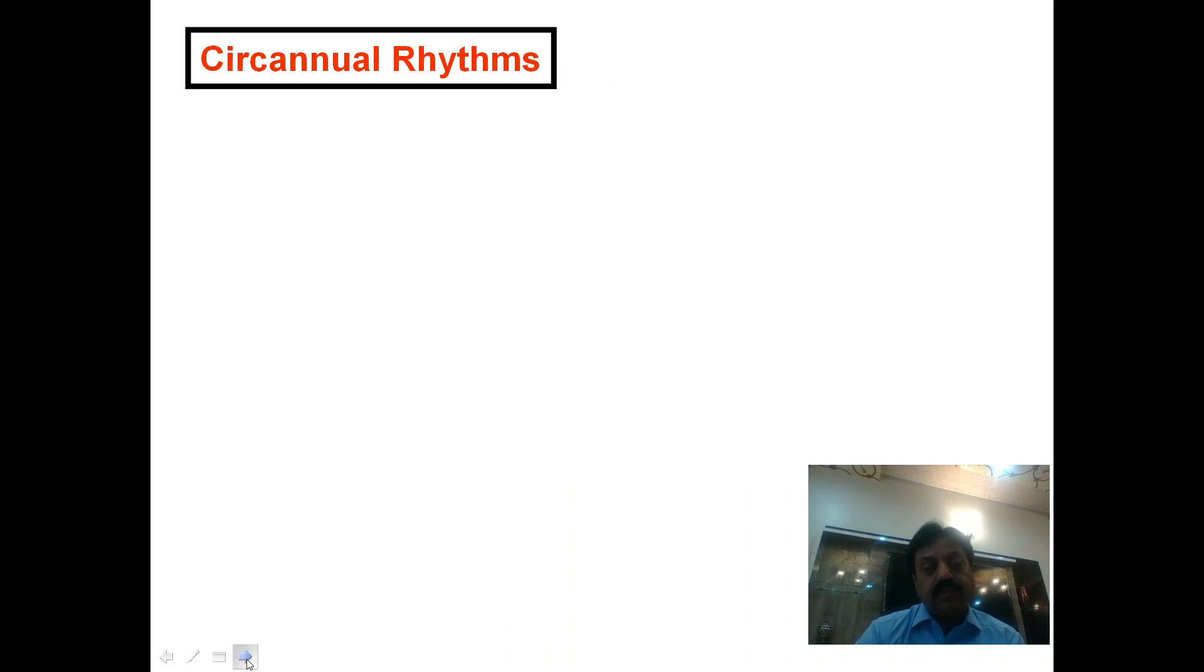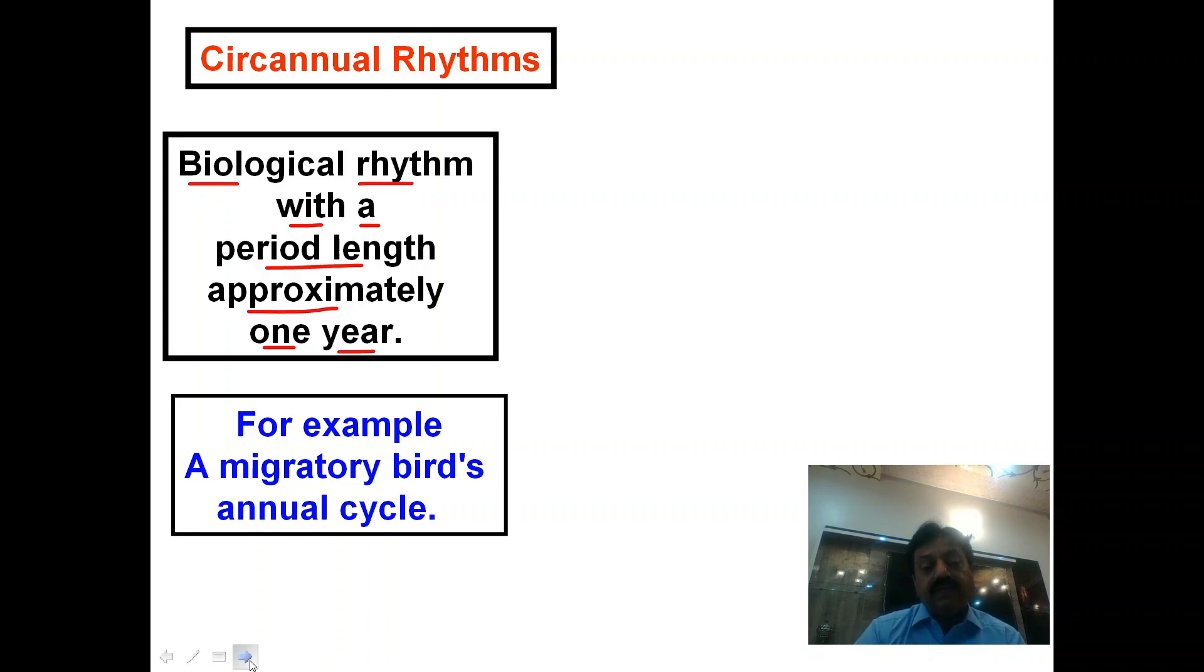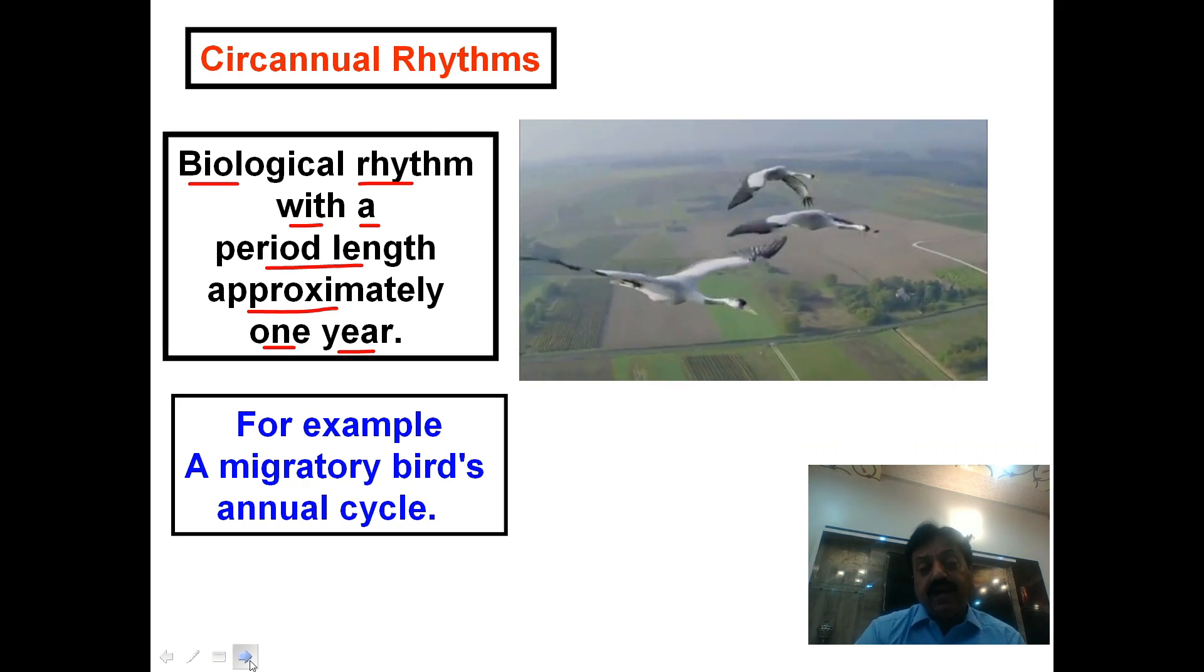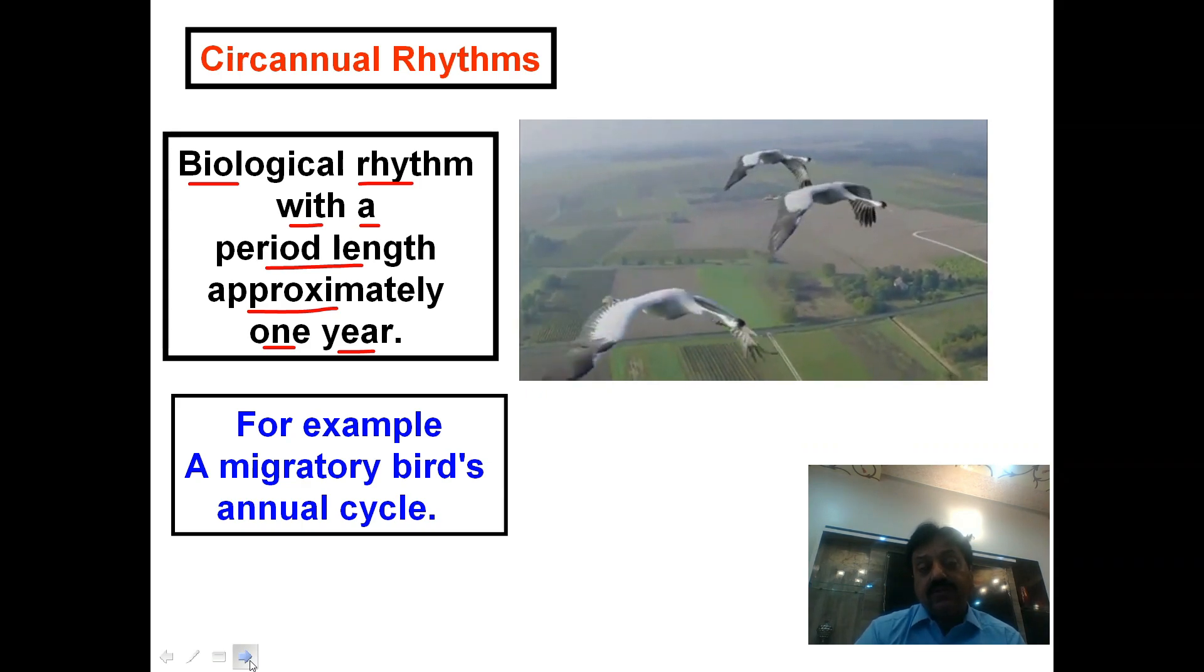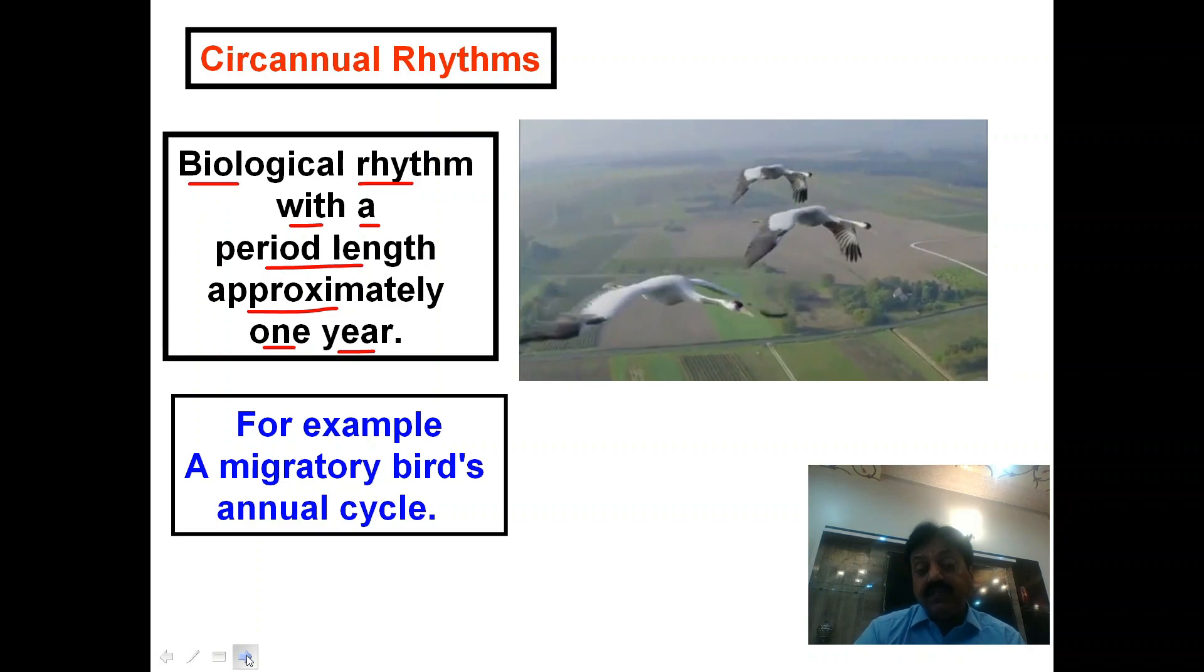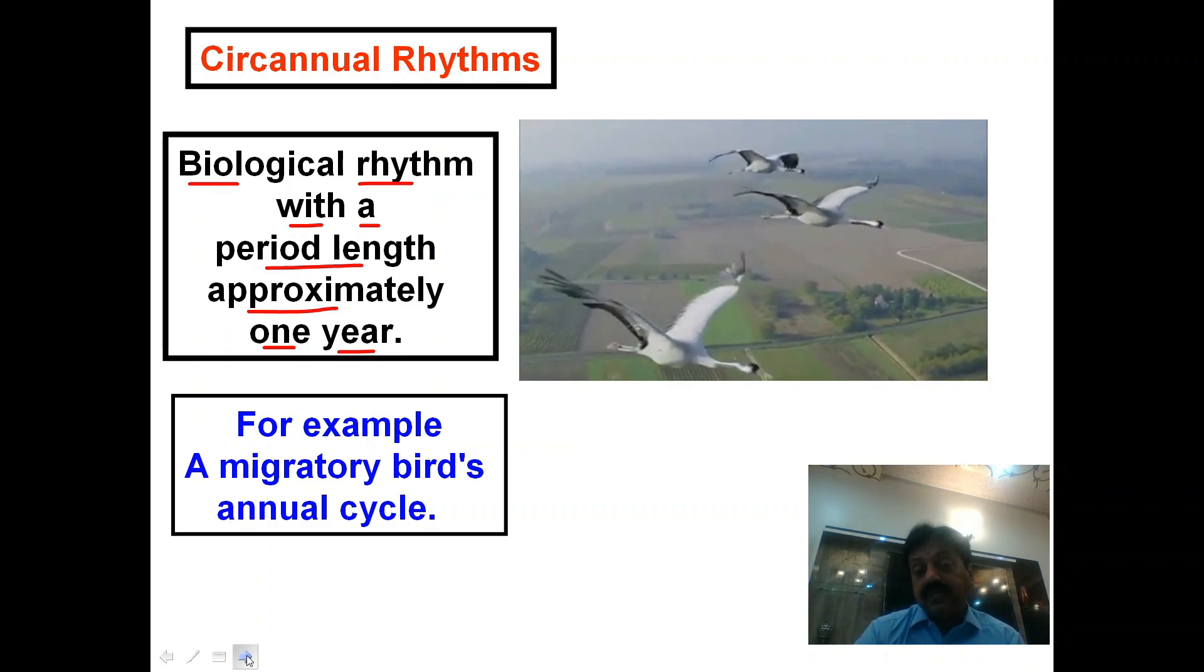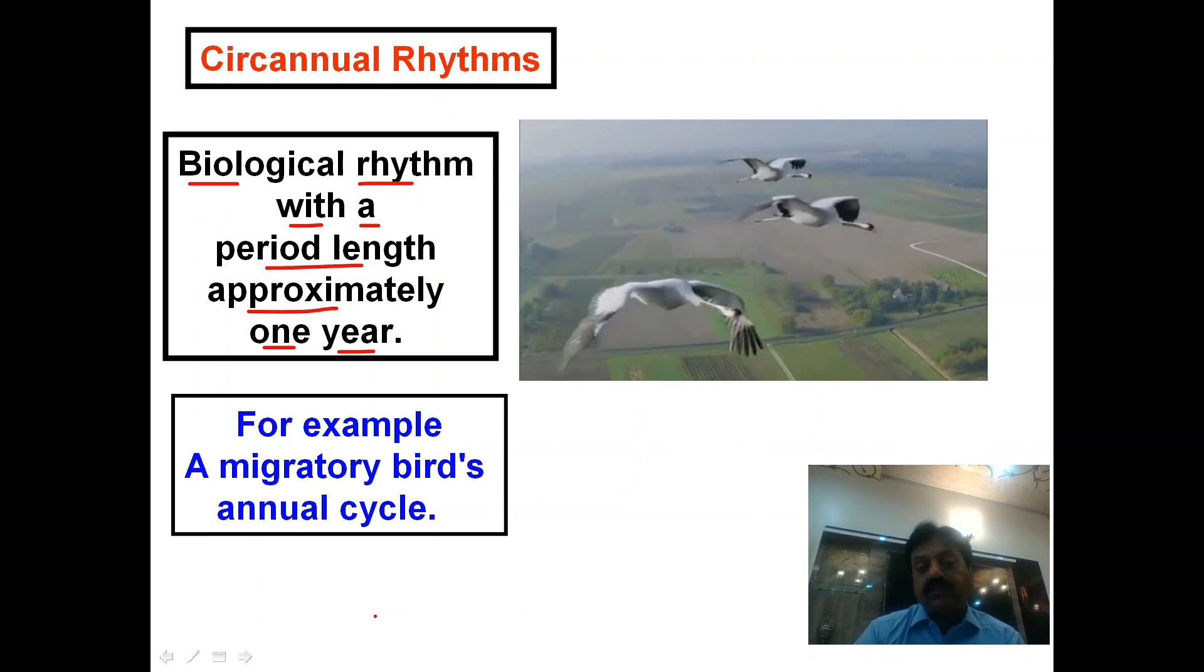Circannual rhythms are biological rhythms with a period length of approximately one year. These rhythms repeat on an annual basis. For example, migratory birds have an annual cycle. Many birds migrate on an annual basis. This is part one. In part two, we will discuss how biological rhythms are controlled internally as endogenous rhythms.